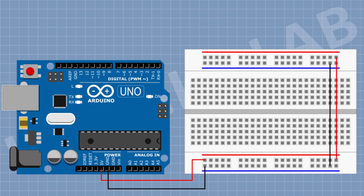First connect the positive supply rail of the breadboard to the 5V pin of Arduino. Now connect the negative supply rail of the breadboard to the ground pin of the Arduino. Now connect an LED and connect its anode to pin D2 of Arduino. Now connect a 100 ohm resistor — connect its one pin to the cathode of the LED and its other pin to ground. The circuit is now complete. Let's see the first example code.